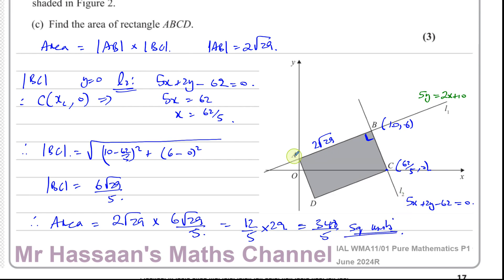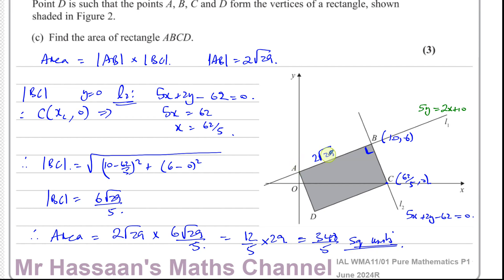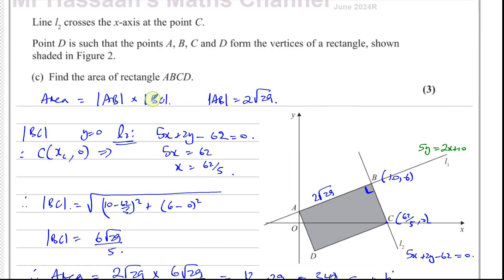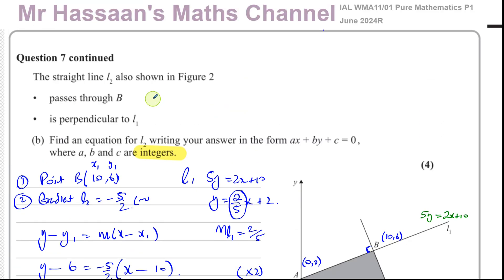The area equals 2 root 29 times 6 root 29 over 5, which is 12 over 5 times 29, since root 29 times root 29 equals 29. So the area equals 12 times 29 divided by 5, which is 348 over 5 square units. That concludes question 7 from the June 2024 R paper of International A-Level Pure Mathematics P1 from Edexcel.